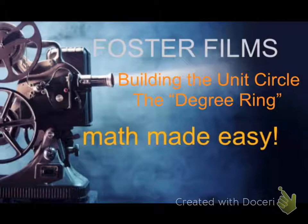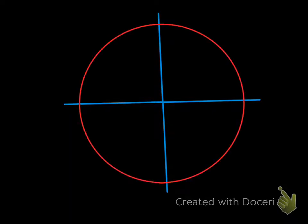So what you're going to find is that we really have three rings of information on the unit circle, and the first of these is called the degree ring. Here's an xy coordinate grid, and upon this xy coordinate grid we're going to place a circle.